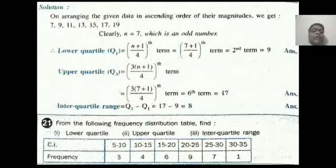It is clear to you, I hope all of you understood. Now another question, it is related to grouped data to find out also the lower quartile, upper quartile, interquartile range. Question given, class interval 5 to 10, frequency 3, 10 to 15 frequency 4, 15 to 20 frequency 6, 20 to 25 frequency 9, 25 to 30 frequency 7, 30 to 35 frequency 1.